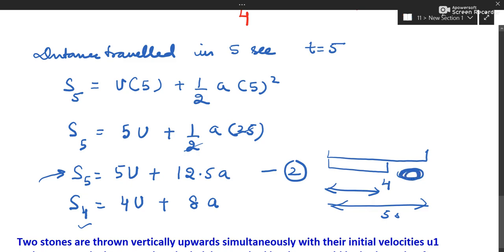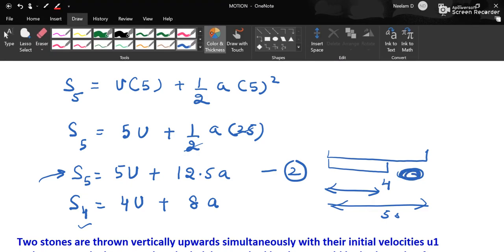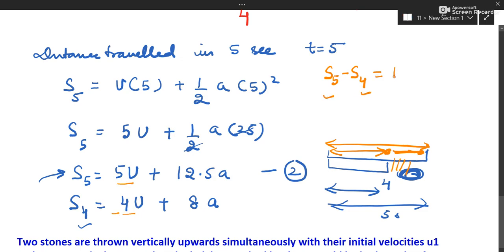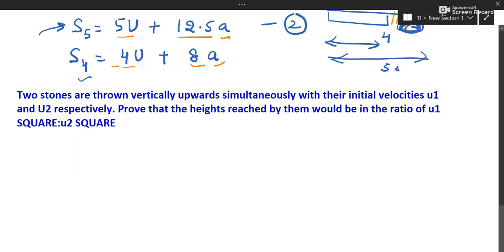Subtracting s₄ from s₅ gives the distance between the 4th and 5th second, which is what was asked. So s₅ minus s₄: 5u minus 4u is u, and 12.5a minus 8a is 4.5a. So the answer is u + 4.5a.